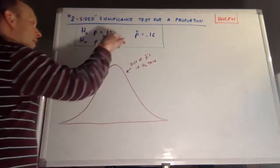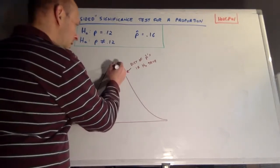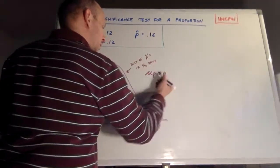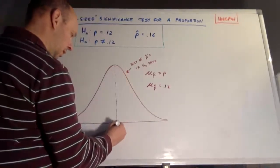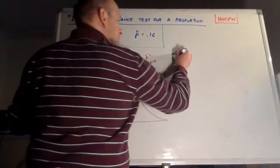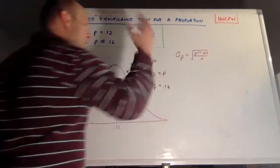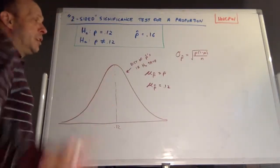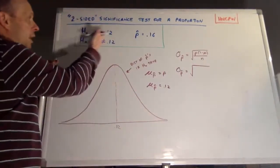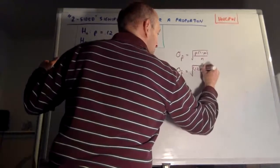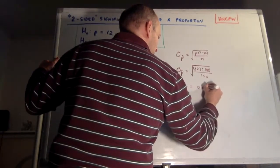This normal curve is the sampling distribution of P-hats if the null hypothesis is true — assuming the true proportion of left-handers really is 12%. That means the mean of all the P-hats equals P = 0.12, so the curve is centered at 0.12. The standard deviation equals the square root of P times 1 minus P over N. With P = 0.12 and N = 100, that's the square root of 0.12 times 0.88 divided by 100, which gives about 0.0325.